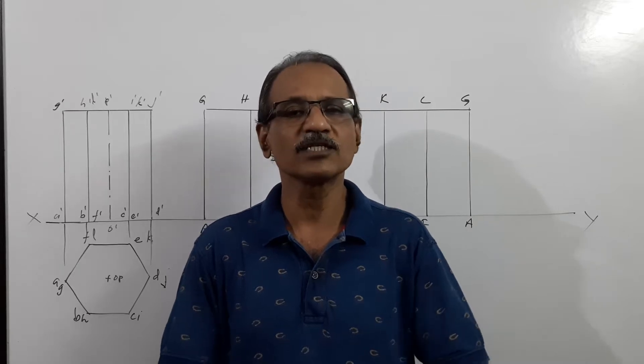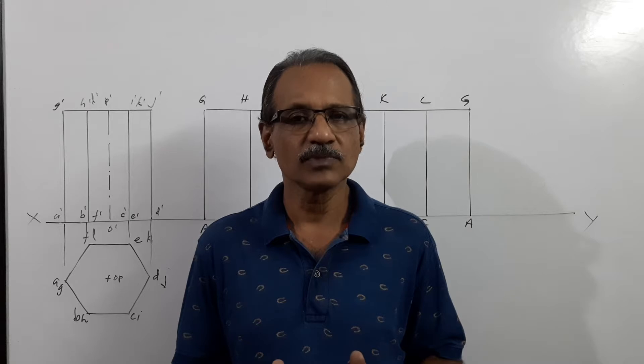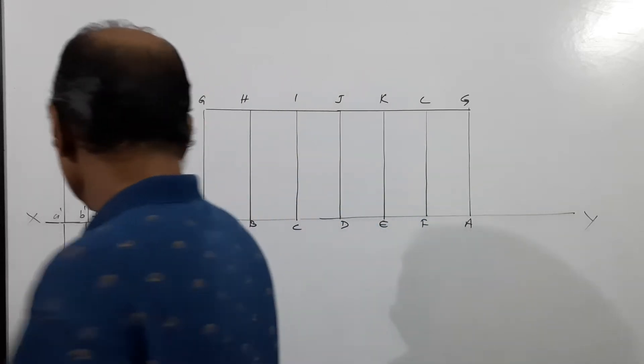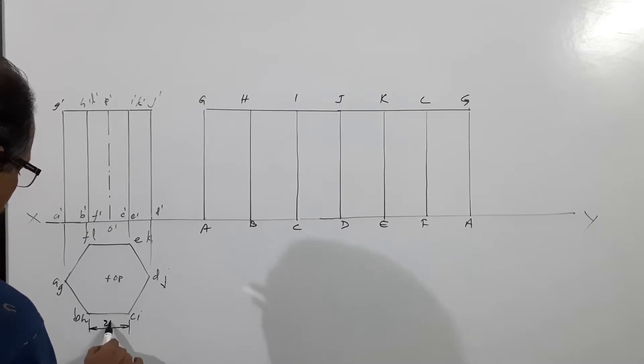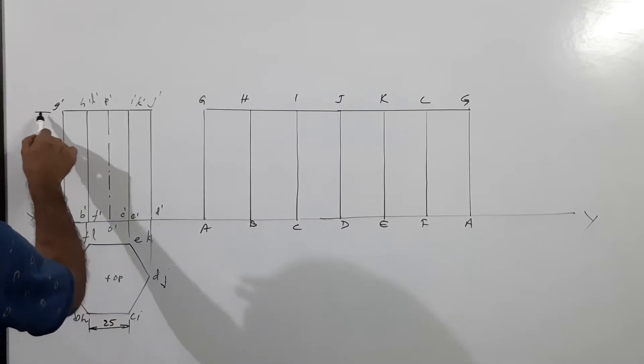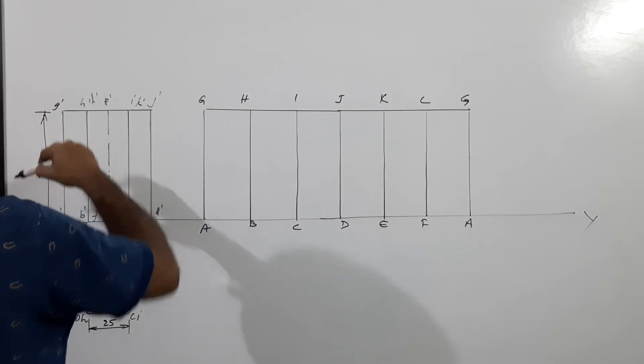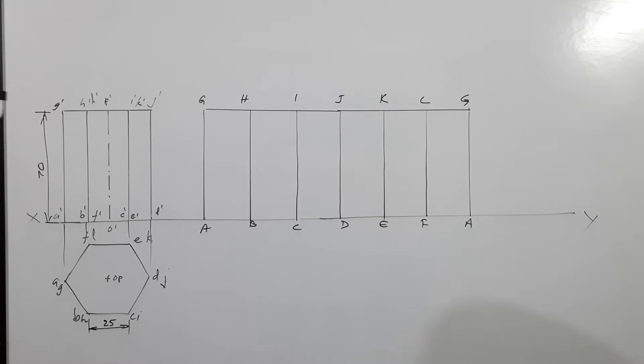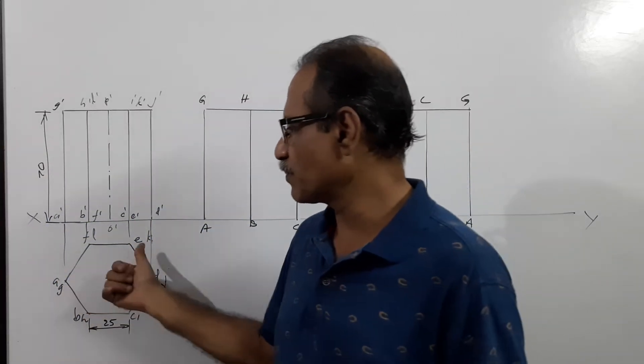The question is: a hexagonal prism 25 mm side of base and 70 mm axis stands on HP on its base with a side of base parallel to VP.